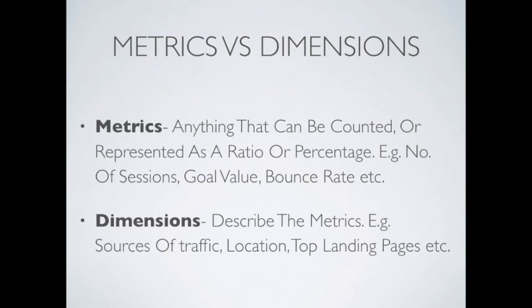Just saying that your site receives one million visits in a month is half-baked information. But when you add a dimension to it — saying that 50% of your one million visits come from social, 30% from organic search, and 20% from referral — then it gives a much fuller picture about your sessions or traffic.